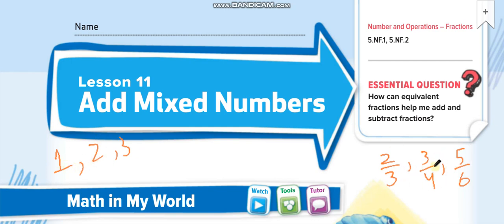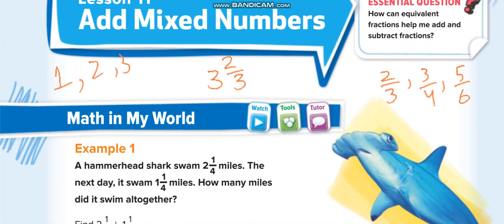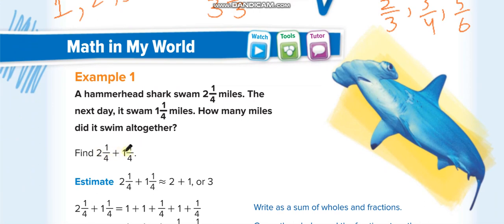When we write both a whole number and a fraction together, like three whole and two-thirds, that is known as a mixed number. It means three complete parts, and the fourth one is not complete — we divided it into three parts and only have two. That form is known as mixed numbers.